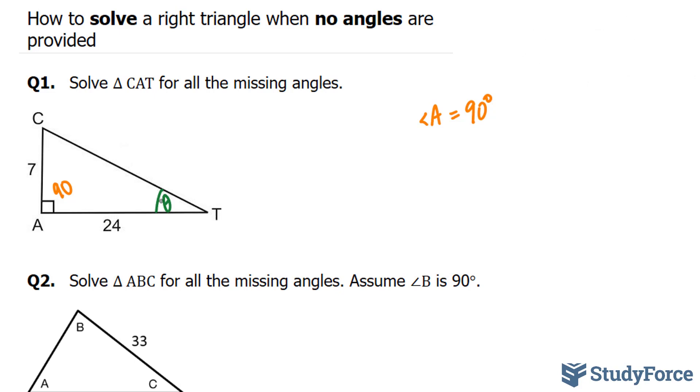And what we have relative to this angle is this side, which is opposite of this angle. Notice how it's opposite. And we also have this side, which is right next to the angle. Therefore, this is called the adjacent side. And that's what adjacent means, next to.